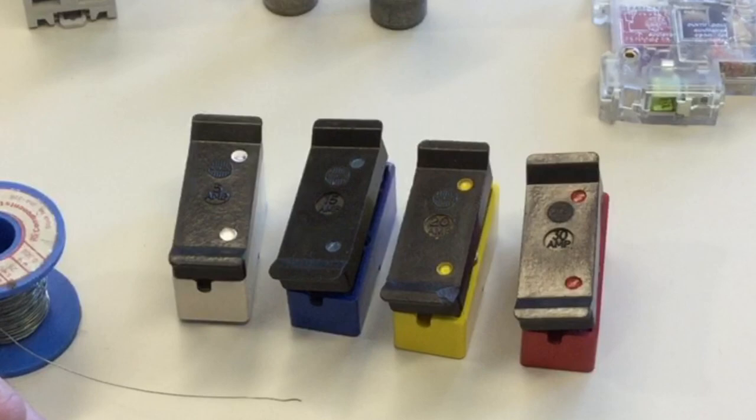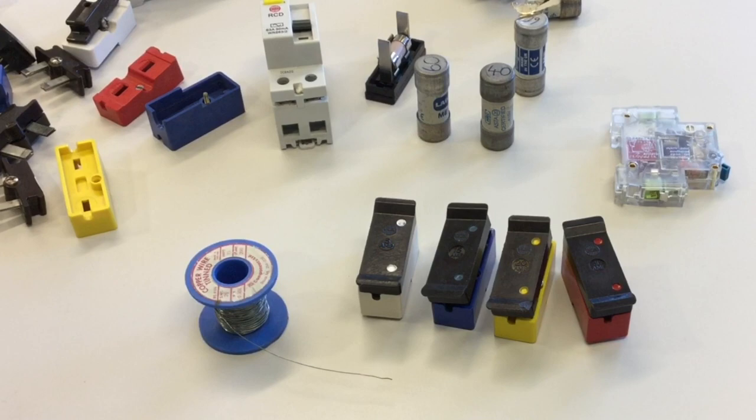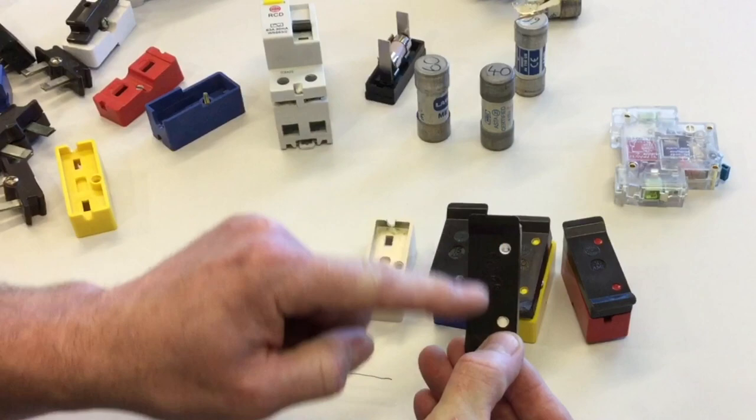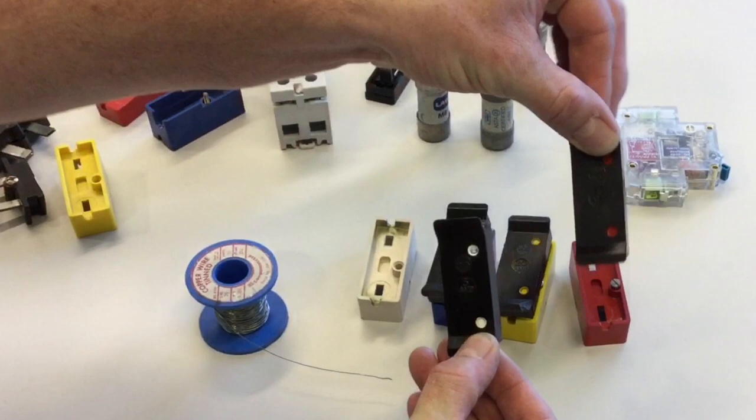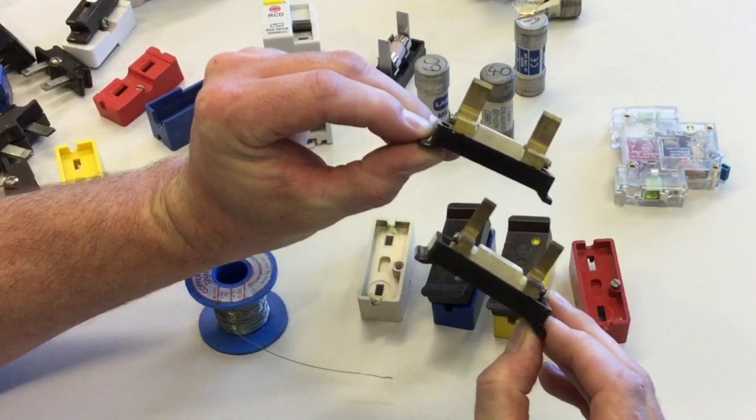These rewireable fuses, BS3036 semi-enclosed fuses, all come with a very similar design. I'll pull out a 5-amp rewireable fuse, denoted by color white. It looks very similar in construction to the 30-amp rewireable fuse, except when you turn them over you can see the brass pins on the 5-amp are considerably smaller than those of the 30-amp design.